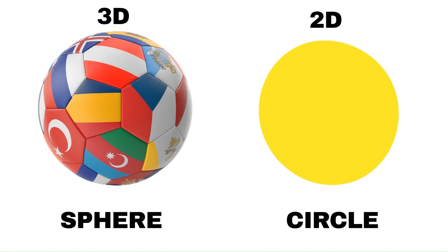Let's take an example of a ball and a circle. A ball is a 3D object — the shape is a sphere — while a circle is a 2D object. Can you spot the difference between their appearance? The ball is a solid object, while the circle is a flat object. The solid object takes some space, while the flat object doesn't take space and can be drawn on a paper.